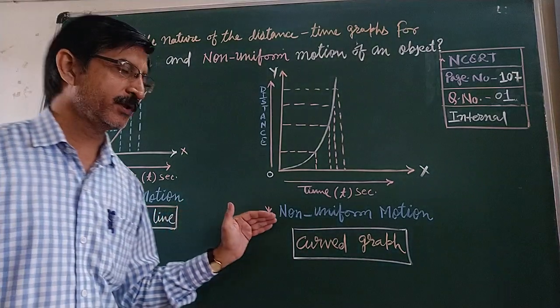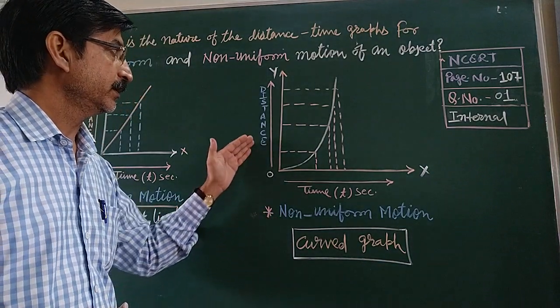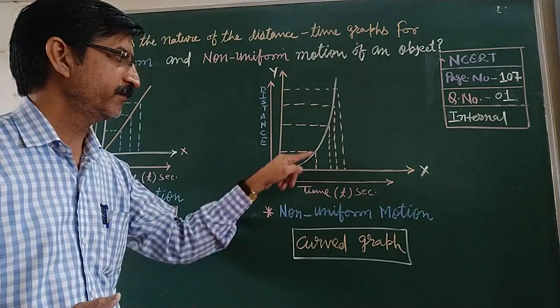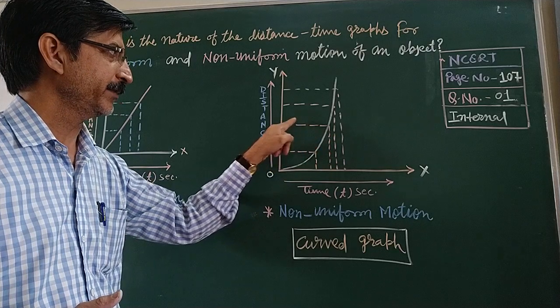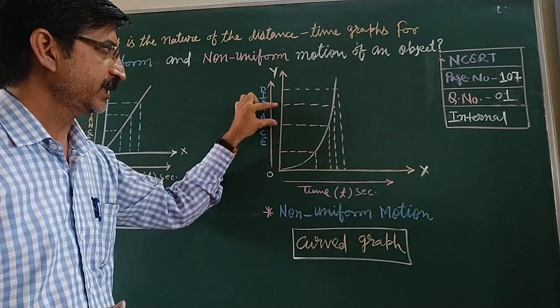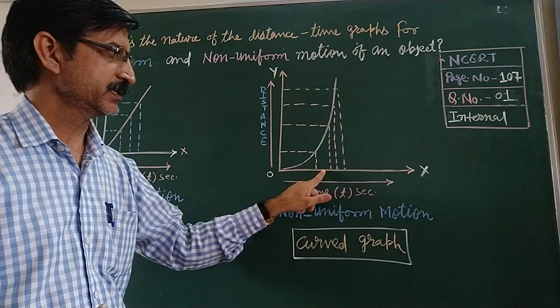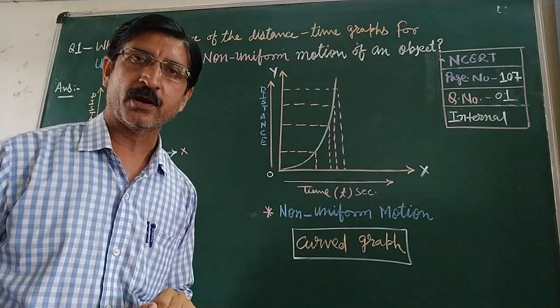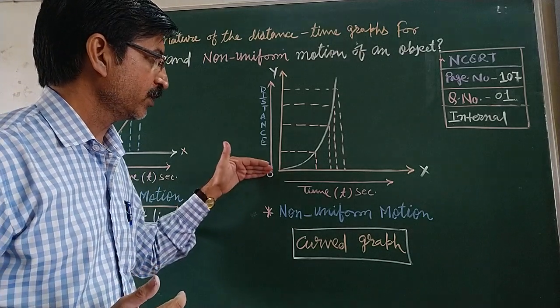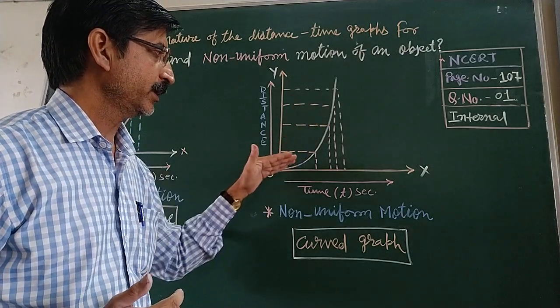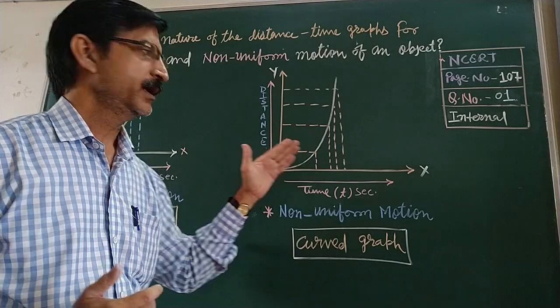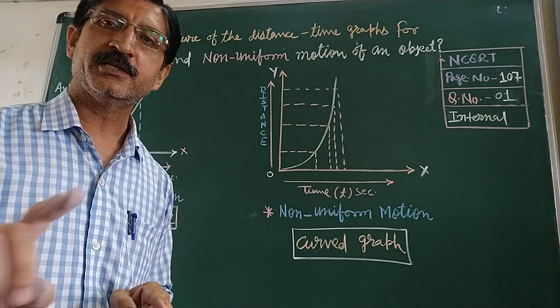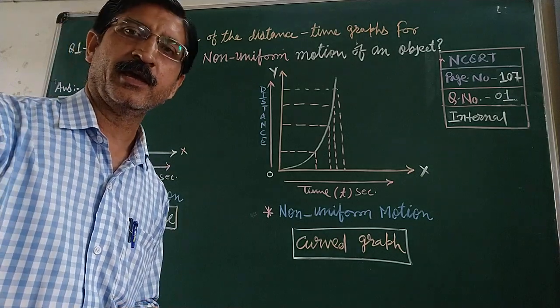But in non-uniform motion, the covered distance and time are both alike. The graph may be a dotted line. The gap is more and more, and the time axis may be less. This shows that the graph is a curved graph. This graph shows that every time its velocity will change. Thank you.